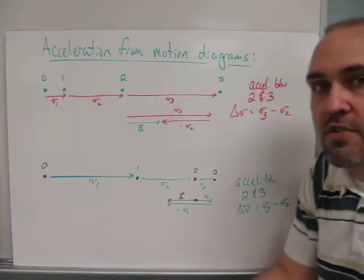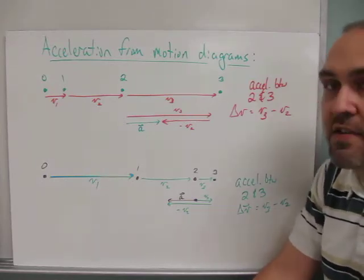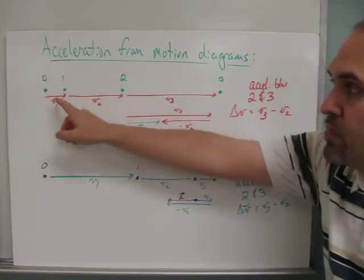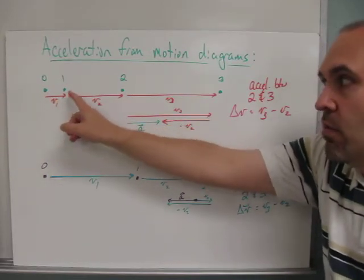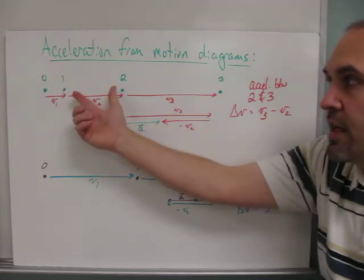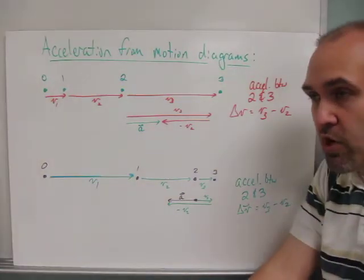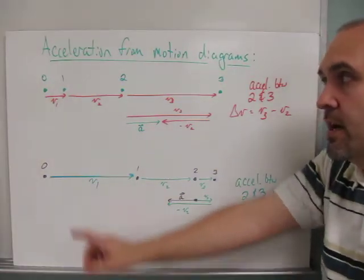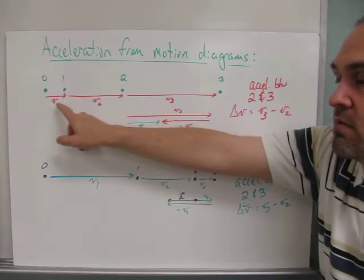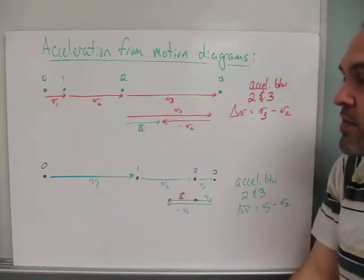If we look at some motion diagrams, we can see how this affects the acceleration vector. In this green one here, we see we start at 0 and go to 1 and 2 and 3. You'll notice that these positions are getting more space as time goes on, which means that the velocity is increasing. We're covering more distance with time. So that first velocity from 0 to 1, we could call that v1, and then it gets bigger from 1 to 2, v2, and then bigger still from 2 to 3, we call that v3.